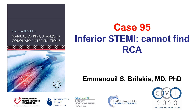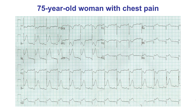This is a case of an inferior ST-segment elevation myocardial infarction in which the right coronary artery could not be found. The patient was an elderly woman that presented with inferior ST-segment elevation myocardial infarction. There is fairly pronounced ST-segment elevation in the inferior leads with reciprocal depressions in the lateral leads and the precordial leads.